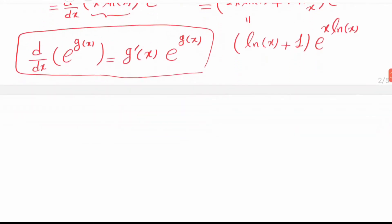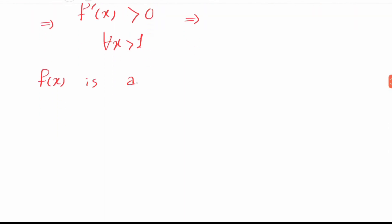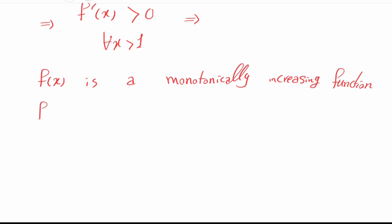Obviously the exponential part e to the x times ln of x is a positive number. We also showed that ln of x is positive for x greater than 1, so ln of x plus 1 is also positive. Therefore the derivative of f with respect to x is positive for each x greater than 1, and f of x is a monotonically increasing function for x greater than 1.